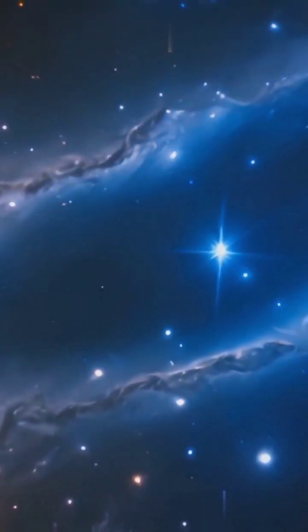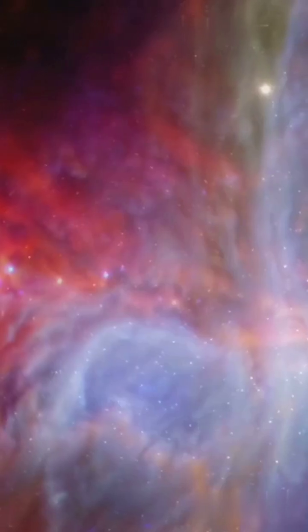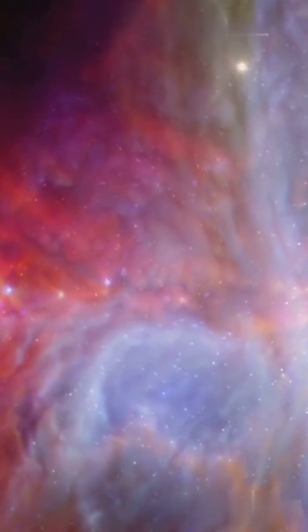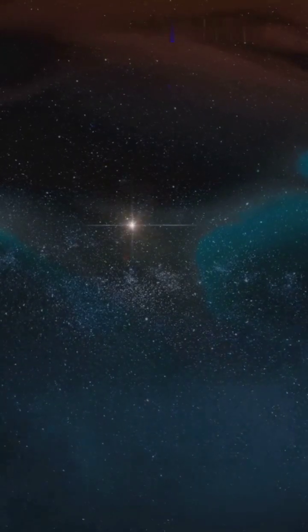Around 4.5 billion years ago, a massive cloud of gas and dust, known as the solar nebula, swirled in space. Gravity pulled this chaotic cloud together, forming the sun at its center.